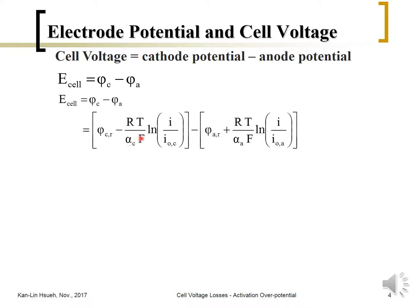The Tafel equation uses the exchange current density I₀ and the charge transfer coefficient α. The cathode potential can be expressed using the cathode Tafel equation, and the anode potential can be expressed by the anode Tafel equation. We can combine these two expressions.